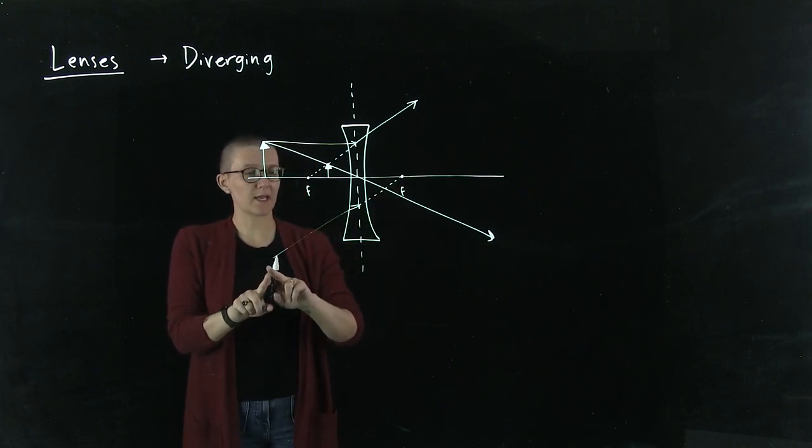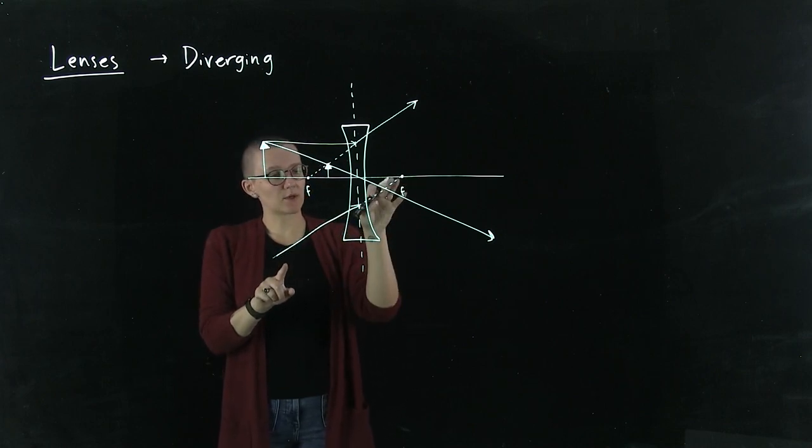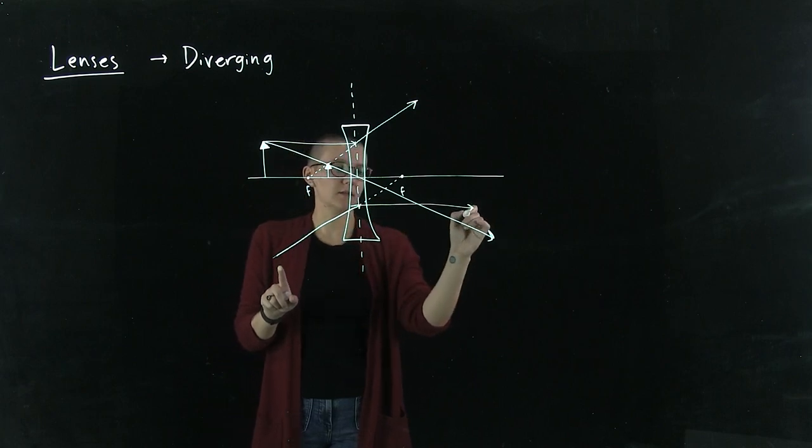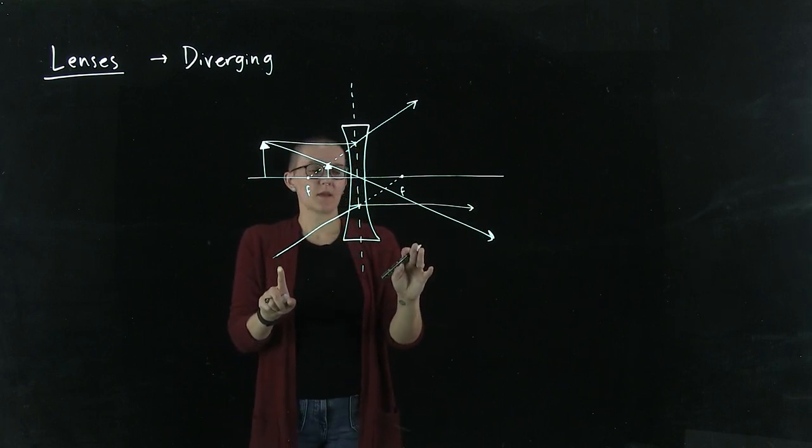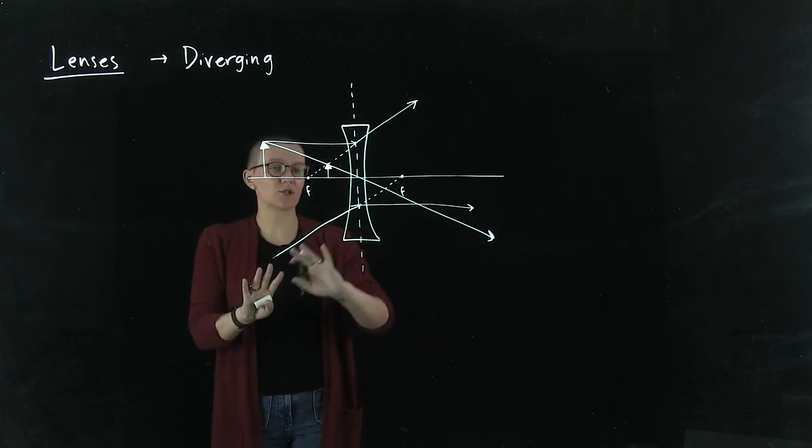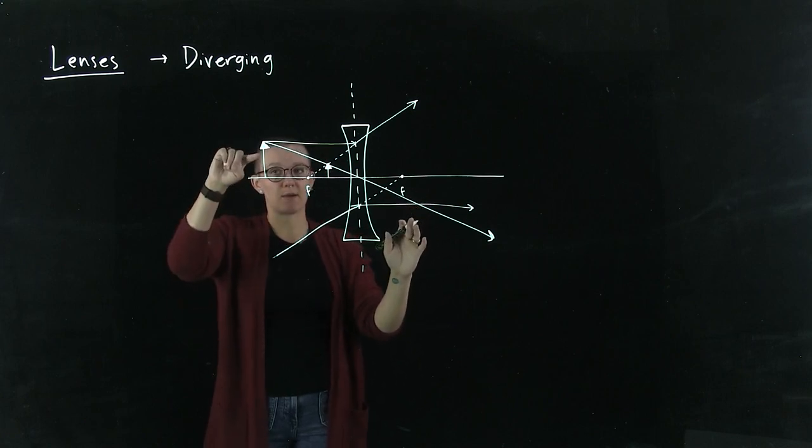Now this ray coming in at this angle, aiming towards the focal point, will be refracted parallel to the optical axis. So that light ray is another light ray you can use. I just drew this randomly, so even though it's intersecting here, that doesn't tell us anything about this object.